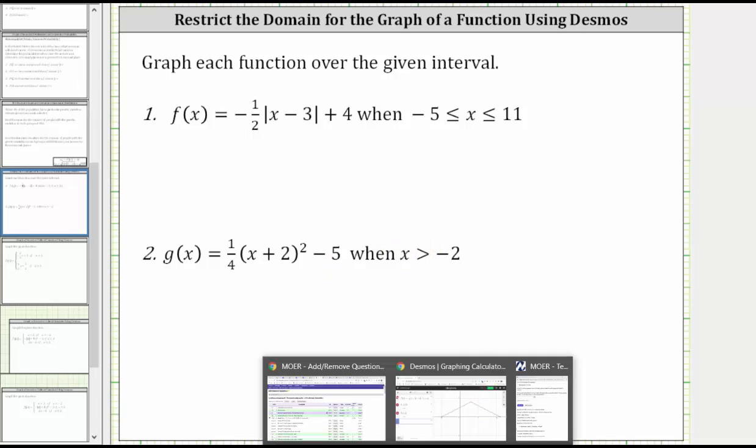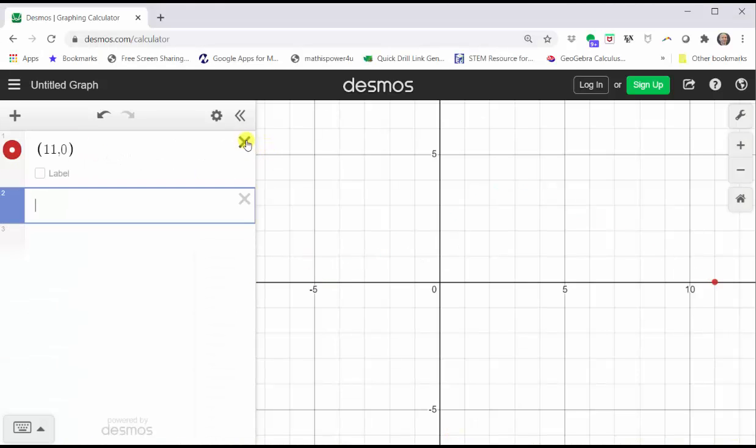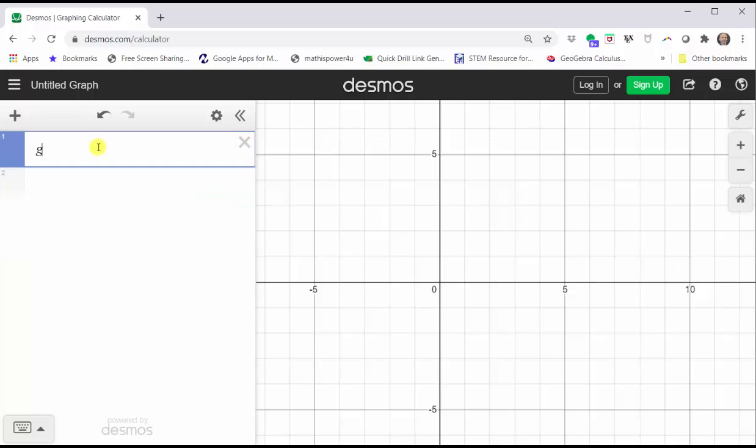Going back to Desmos, let's go ahead and just delete cell one through cell three and now we'll enter g(x) equals one divided by four, tab, open parenthesis, x plus two, closed parenthesis.